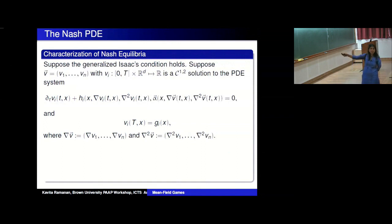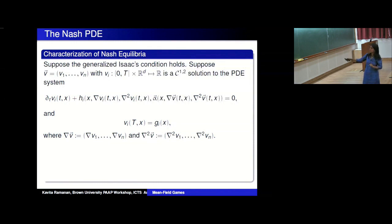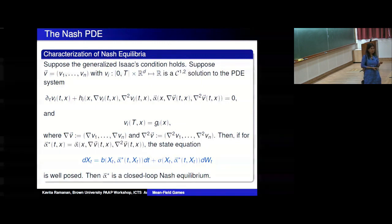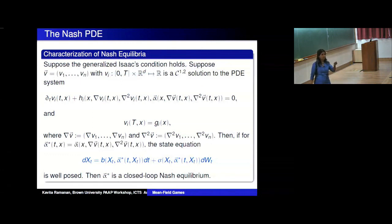Suppose the generalized Isaac's condition holds and V is a C^{1,2} solution to this PDE system, explicitly written in terms of the H_i defined. If the SDE is well-defined with this definition, then alpha star is in fact a closed-loop Nash equilibrium. This is a known fact. So there's a characterization: to solve for optimal Nash controls alpha*(t, x), you solve this PDE system. The initial condition doesn't really matter because you start somewhere else and solve the same PDE.